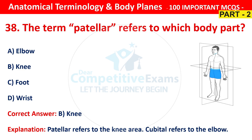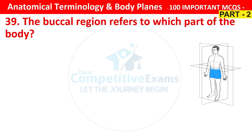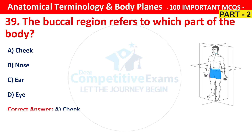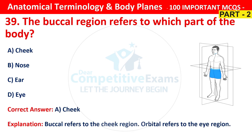Question number 39. The buccal region refers to which part of the body? Your options are cheek, nose, ear or eye. The correct answer is A, that is cheek. Buccal refers to the cheek region, and orbital refers to the eye region.